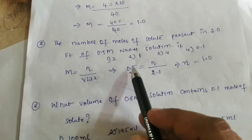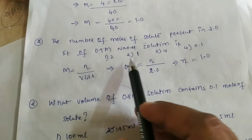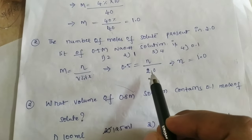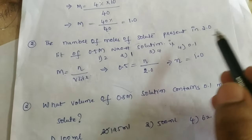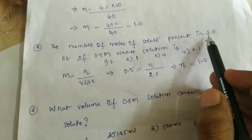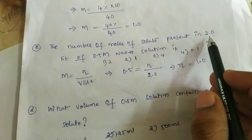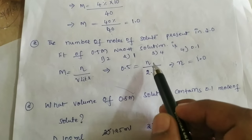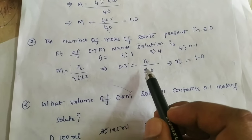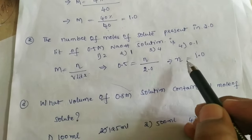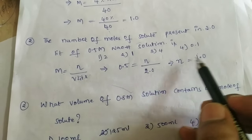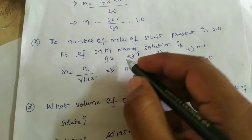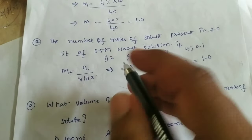Given molarity is 0.5 molar and volume is 2.0 liters. Substituting: 0.5 = n / 2.0, therefore n = 0.5 × 2.0 = 1.0 moles. The answer is option 2, which is 1.0.